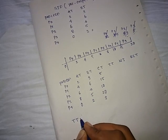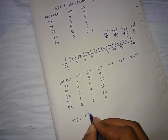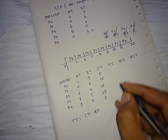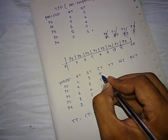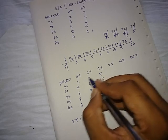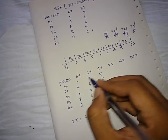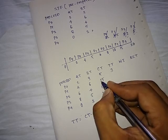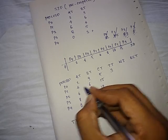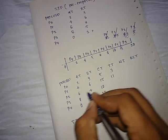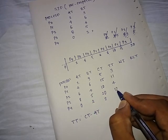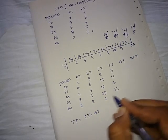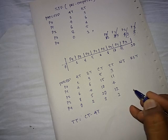The formula for turnaround time is completion time minus arrival time. For P0: 5 minus 2 equals 3. For P1: 15 minus 4 equals 11. For P2: 10 minus 6 equals 4. For P3: 20 minus 8 equals 12. For P4: 2 minus 0 equals 2.